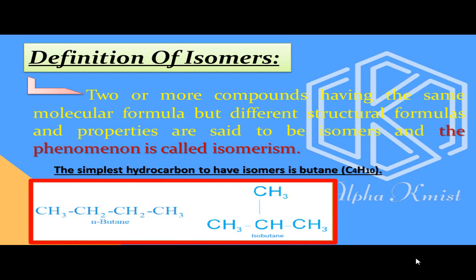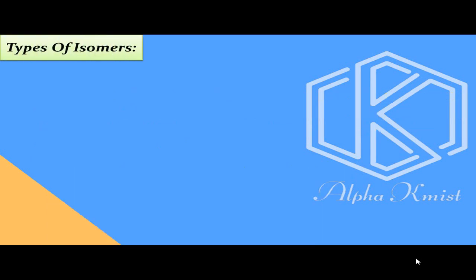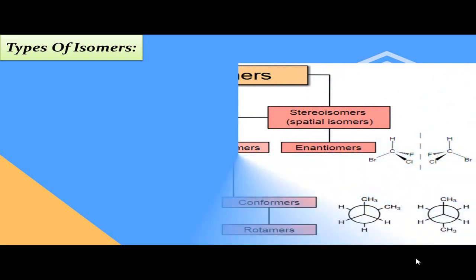N-butane میں carbon atoms ایک chain میں ہیں اور isobutane میں carbon atoms chain میں ہیں اور ایک side chain بھی لگی ہے۔ دونوں molecules میں number of carbon atoms چار ہیں اور number of hydrogen atoms دس ہیں۔ Next ہم types of isomers کی طرف بڑھتے ہیں — basically 2 types ہیں۔